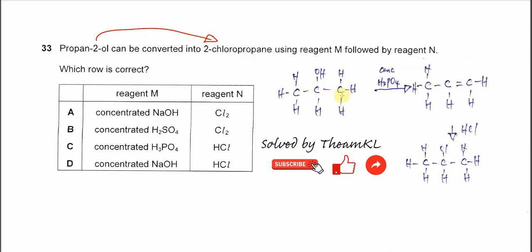The first step must involve dehydration to form the alkene. So propane-2-ol, when we use a concentrated acid like concentrated phosphoric acid, will undergo dehydration. The OH and H will be removed to form propene.